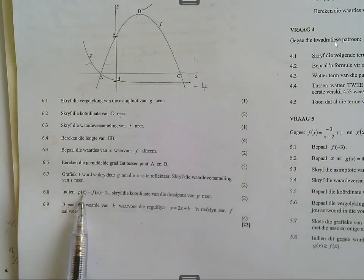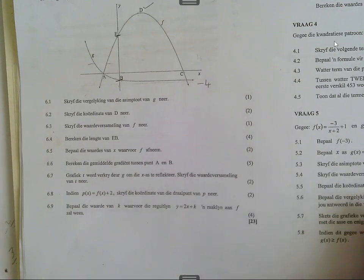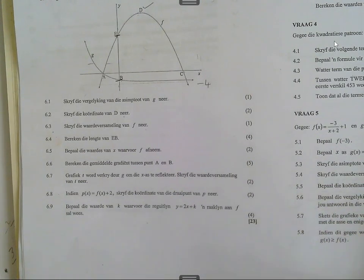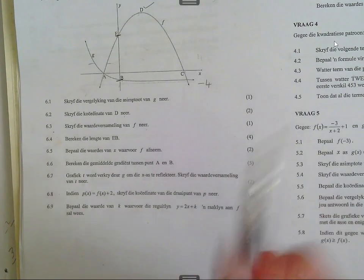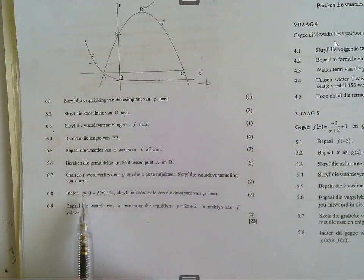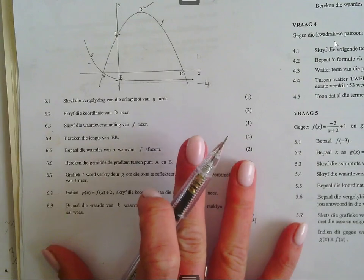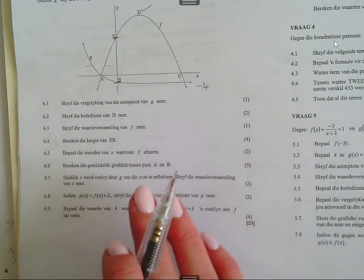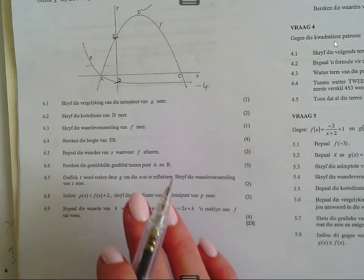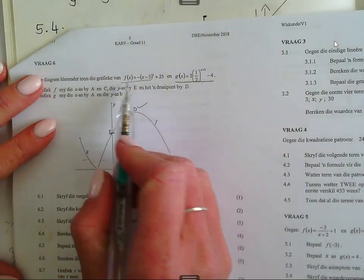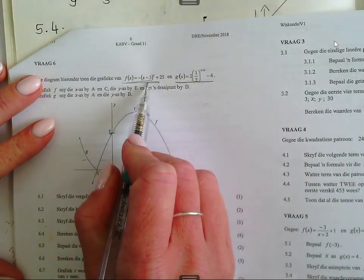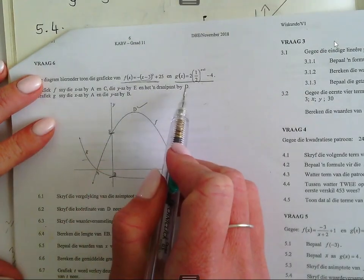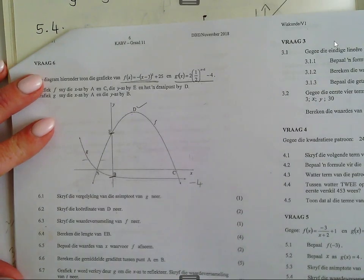En die P, jy het ons nou weer so eniekie, ons het nie een P grafiek nie. P is nie een van die grafieke nie, maar hy sê P is F plus 2. Daar is F, plus 2. Hy gaan net een ding beinvloed, en dis die 25.